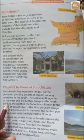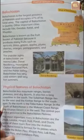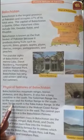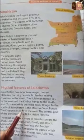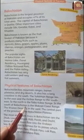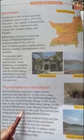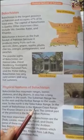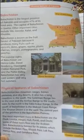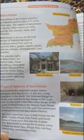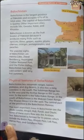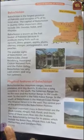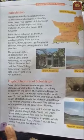The Suleiman Range lies to the east and the Kirthar Range to the south. The Toba Kakar Range is also found in the north. The Sahil coastline is in the south, and the Kharan Desert is also located in the south of Balochistan.